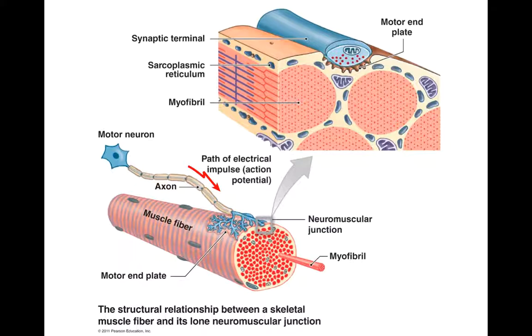All right, so first things first, an action potential arrives at a terminal button of neuromuscular junction and that happens through a motor neuron. So the action potential is going to travel and it's going to get here at a neuromuscular junction. What a neuromuscular junction is, it's a junction between the neuron and a muscle fiber, hence the name.